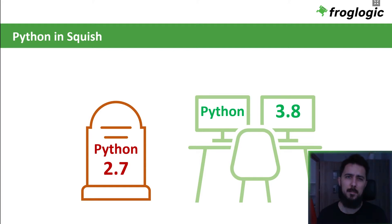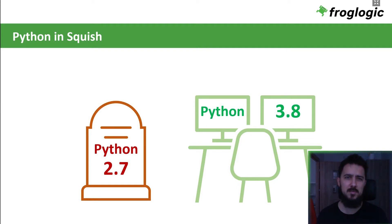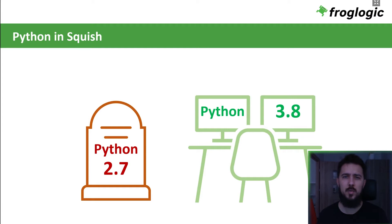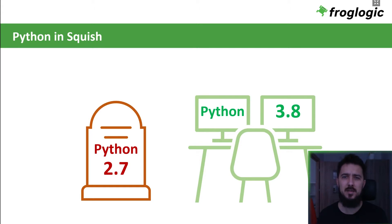Once we establish the Python version to use, we can create our first test cases. Squish's API is great for handling the application under test's graphical user interface, but when it comes to working with the backend of the application, with external files or processes, that might not be enough. And that's where Python's packages come to the rescue.